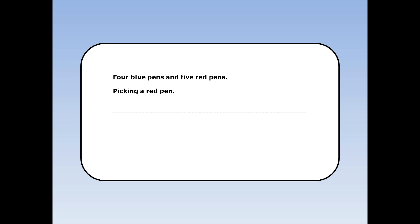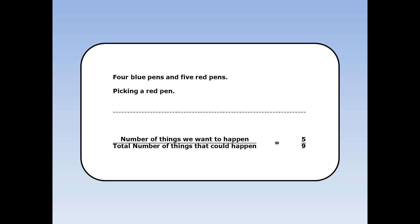I've got four blue pens and five red pens in a pencil case. I'm going to pick one at random. What's the probability of picking a red pen out? Well, the number of things we want to happen is 5, because there are five red pens. The total number of things that could happen is 9, because I've got nine pens altogether. The probability is 5 over 9, or 5 ninths.